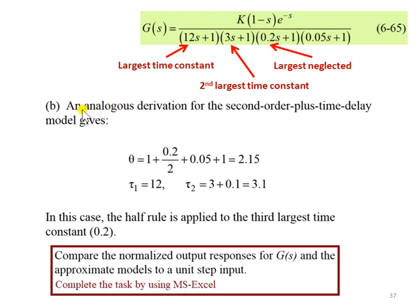Analogous derivation to the previous first-order system, let's look at the approximation on theta or time delay. Theta is equivalent to 1, which is from the original, plus the half rule,